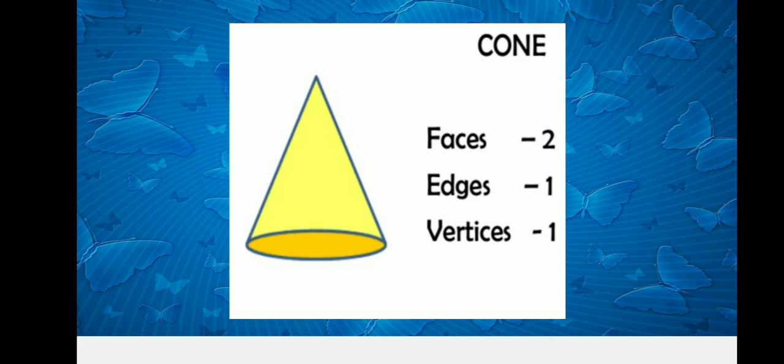Coming to the cone — it has 2 faces, 1 edge and 1 vertex. A cone is a combination of 2 2D shapes: a triangle and a circle. So it has a triangular face and a circular face. Where these two faces join together, there is an edge.